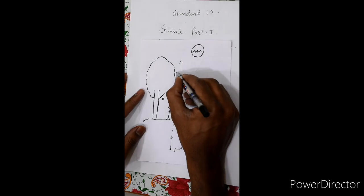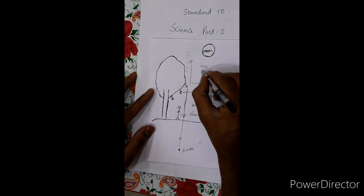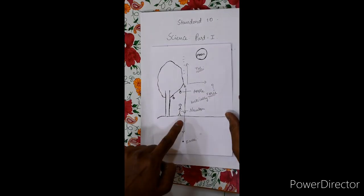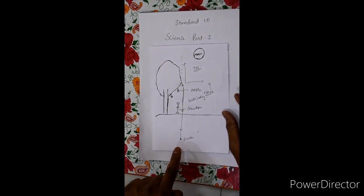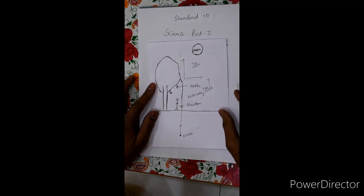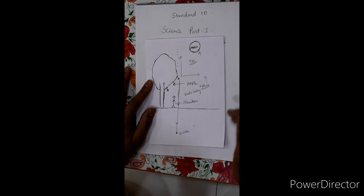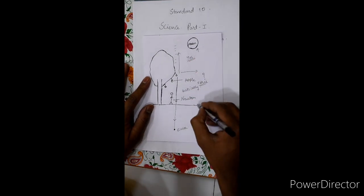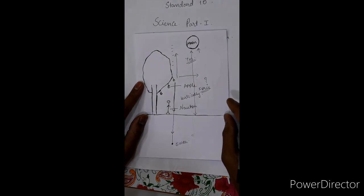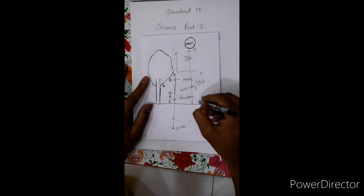Now Newton started to think: if I take this apple to a height, will the condition remain the same? The answer is yes. If I take the apple to a certain height and from there throw the apple, again the apple will fall on the earth's surface. Why? Because the attractive force is coming from the center of the earth. Then Newton saw the moon and started to think that the moon is also at a certain height from the earth's surface. If the moon is at a certain height from the earth's surface, why doesn't the moon fall on the earth's surface?